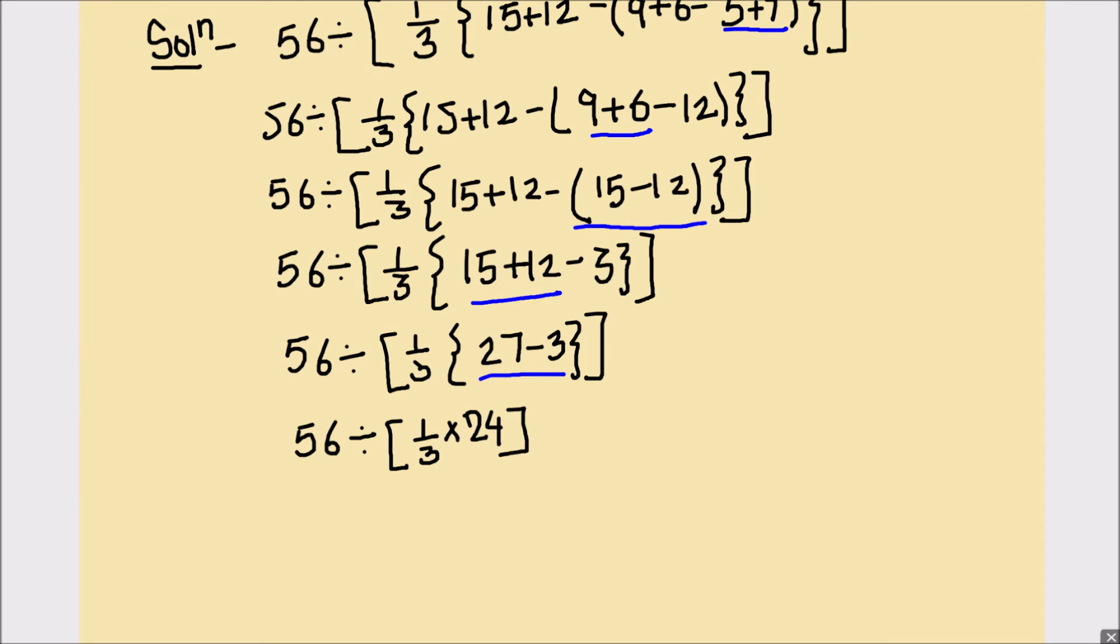In the next step, we'll have 56 divided by one-third times 24. That will be 3 times 8 is 24, so that's 8. And we have solved this bracket, so we'll underline that. And 56 divided by 8 will be equal to 7. So that's our final answer.